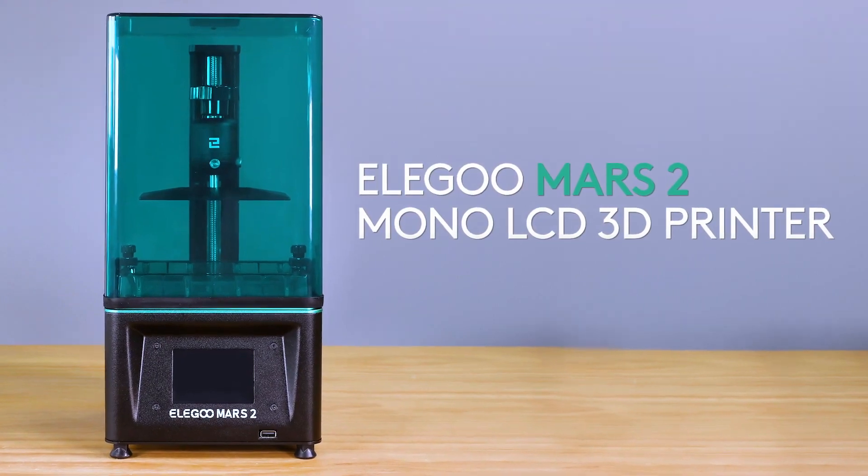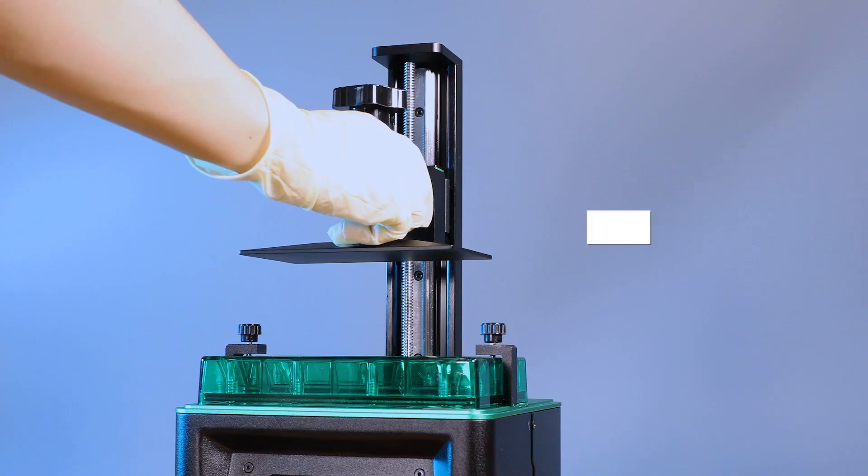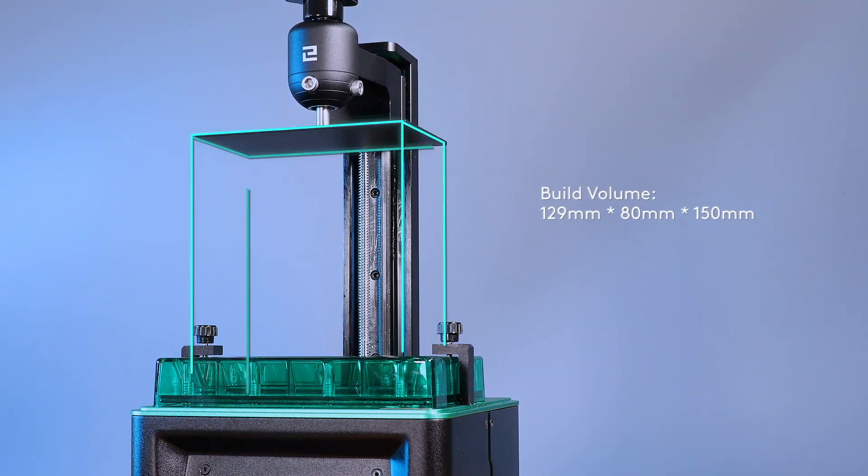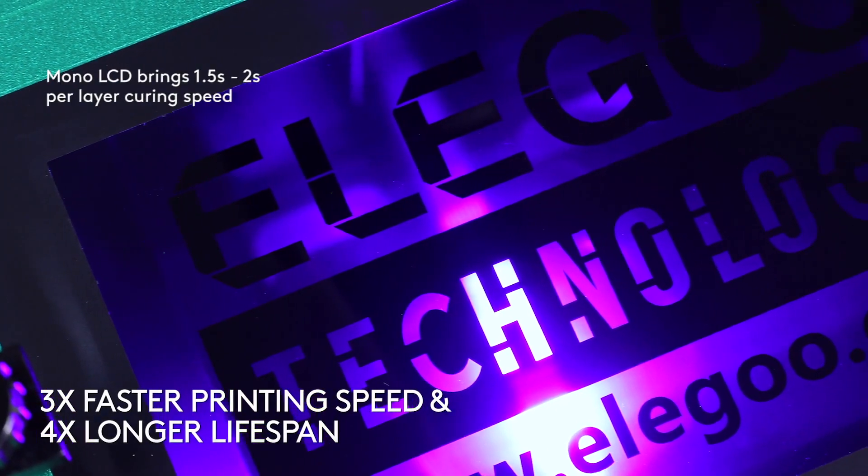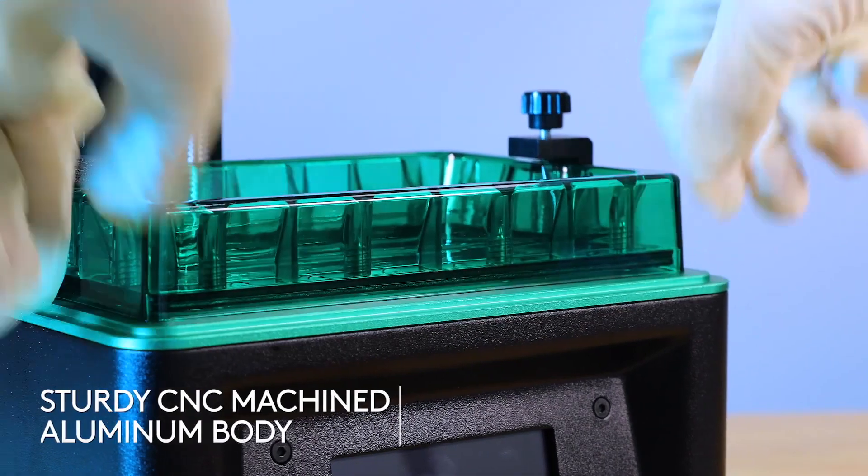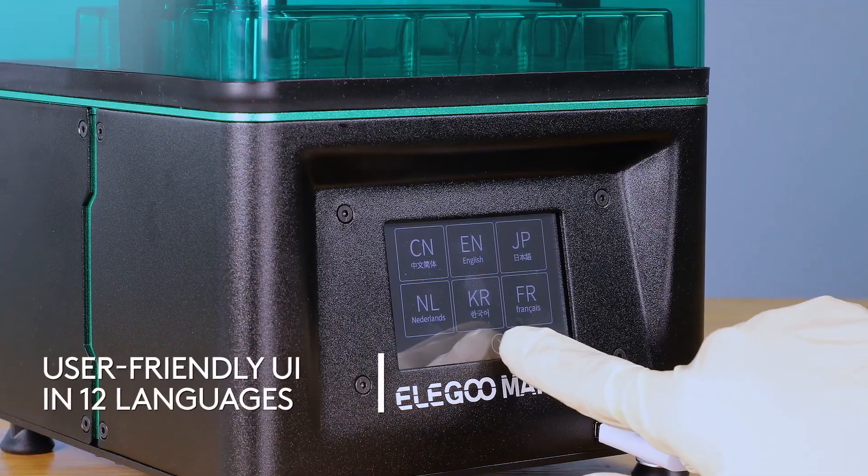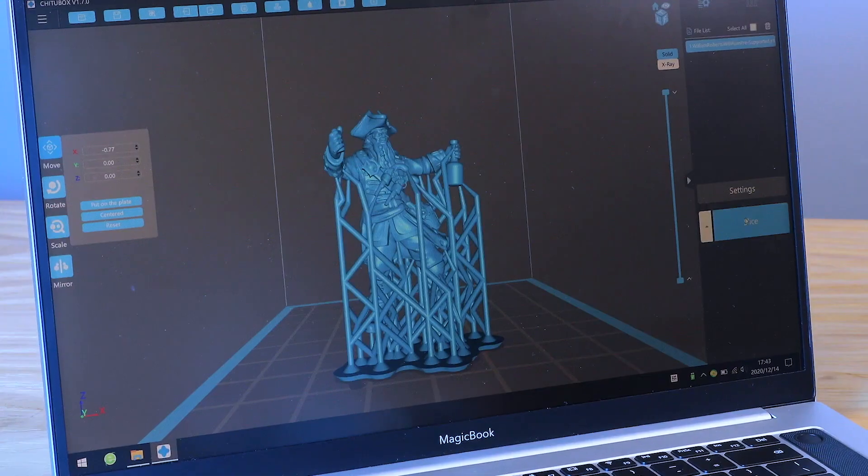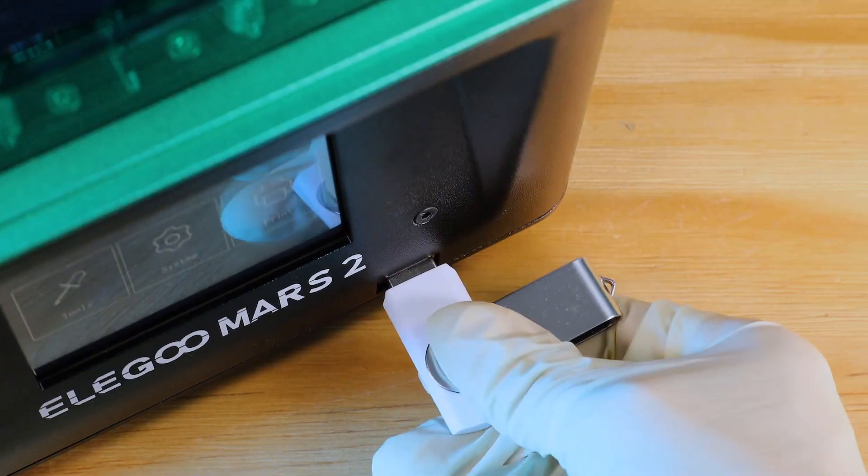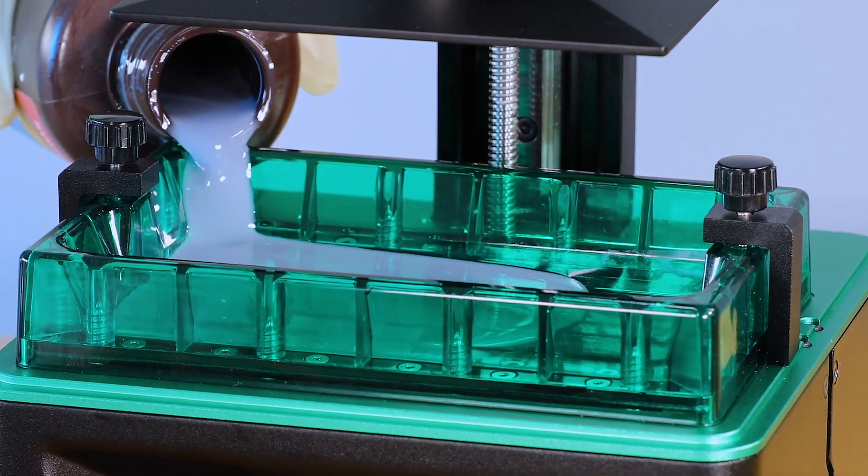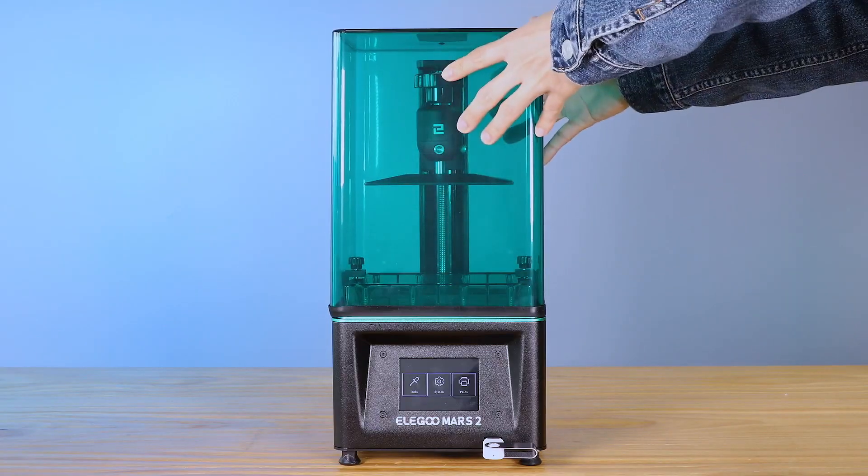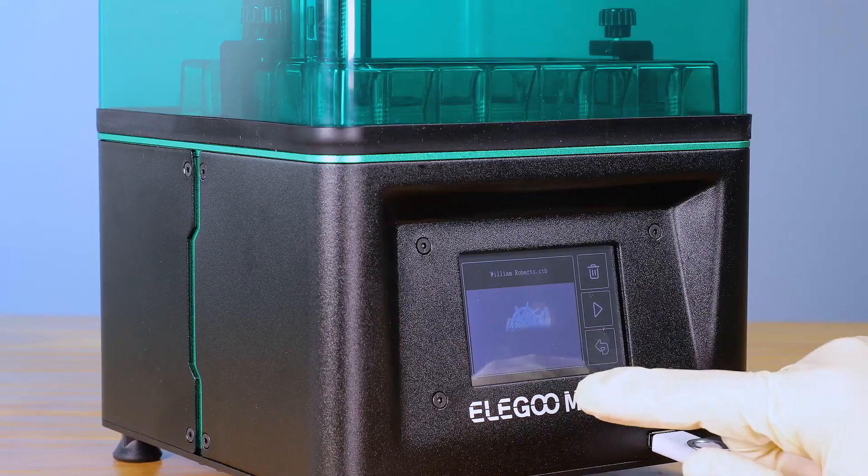For number 3 we have the Elegoo Mars 2. This is an upgraded version of the Elegoo Mars and the Elegoo Mars Pro. They all have very similar characteristics, but this one has a slightly larger build volume of 129x80x150mm with a more powerful ultraviolet display. It has a selling price of $235.